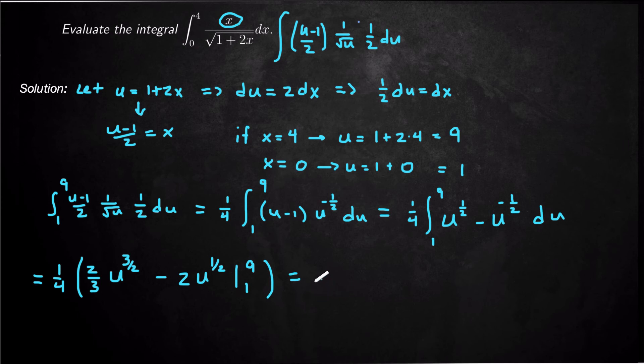And that equals 1 over 4 times 2 thirds. 9 to the 3 halves is really 3 cubed, right? Take the square root of 9 by the 1 half. So then you get 3. Raise that to the third power so you get 3 cubed minus 1 to anything is just 1. Okay, and then minus 2 times square root of 9 which is 3 minus square root of 1 which is 1.